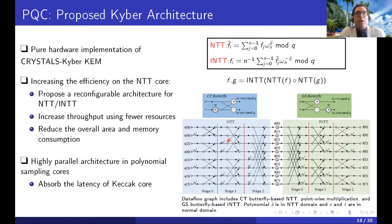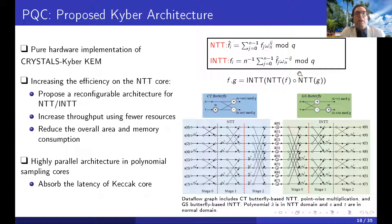We target the pure hardware implementation of the CRYSTALS-Kyber key exchange mechanism. The NTT and point-wise polynomial multiplication is the main operation in lattice-based crypto. We use NTT to efficiently implement polynomial multiplication — polynomials f and g are converted from the normal domain to the NTT domain, then point-wise multiplication is performed, and the results are converted back to the normal domain using the inverse NTT. The data flow for polynomial multiplication of degree 8 uses the CT butterfly for NTT and GS butterfly for inverse NTT.